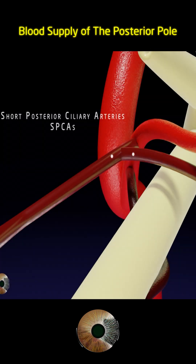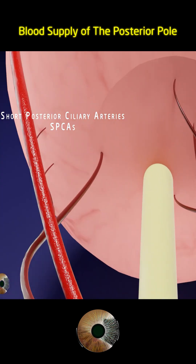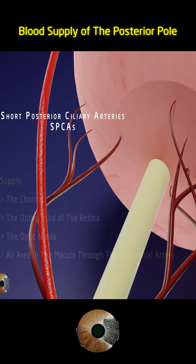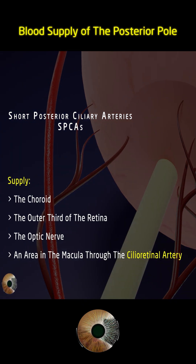The short posterior ciliary arteries are usually 6 to 12 in number. They pierce the sclera around the optic nerve and form the choroidal circulation, supplying the outer third of the retina and the optic nerve. A branch of the choroidal circulation — often one of the short posterior ciliary arteries — may give rise to a ciliary retinal artery, found in 25% of individuals, supplying part of the macular region.